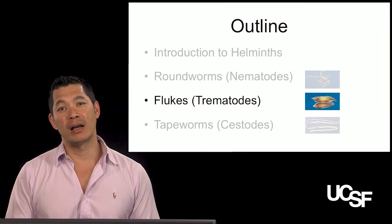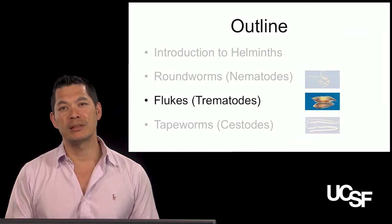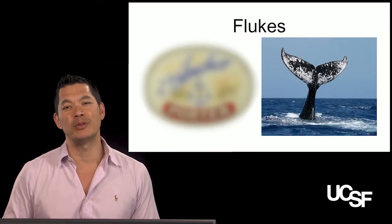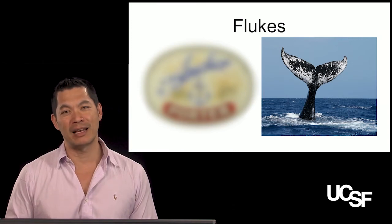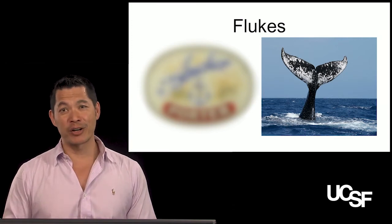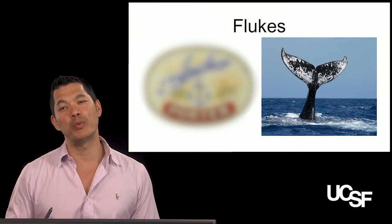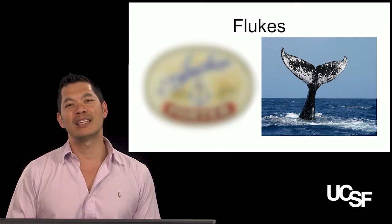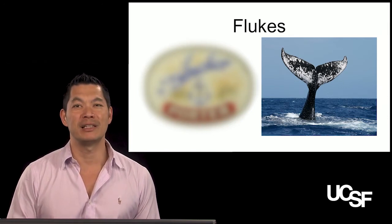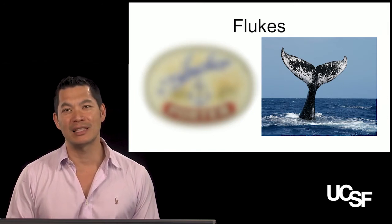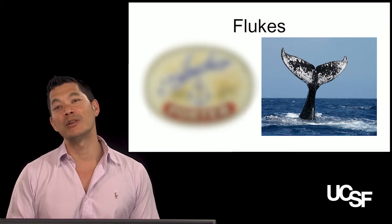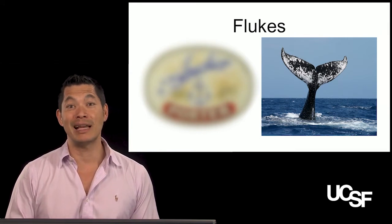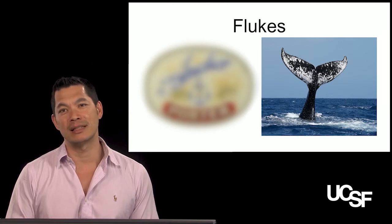Let's focus on trematodes, or flukes. A fluke is the end of an anchor or the tail of a whale that looks kind of like gull's wings. That was really the inspiration for naming this class of organisms flukes, because when you look at them morphologically and macroscopically, they look kind of like that.